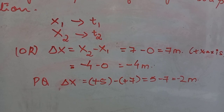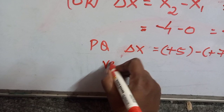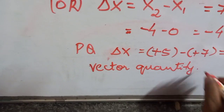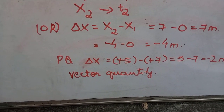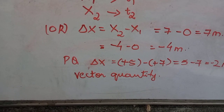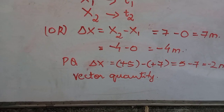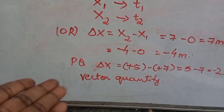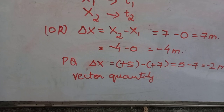Displacement is a vector quantity. A scalar quantity is a physical quantity which has only magnitude but no direction — examples: mass, length, area, density. Vector quantities are physical quantities which have both magnitude and direction — examples: displacement, velocity, force, and acceleration.